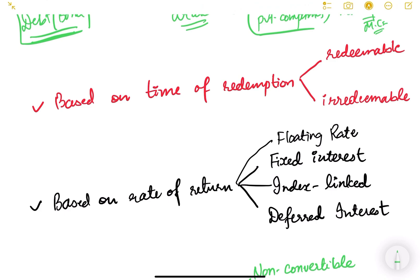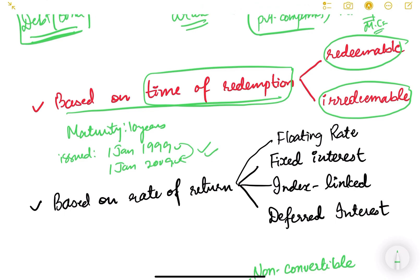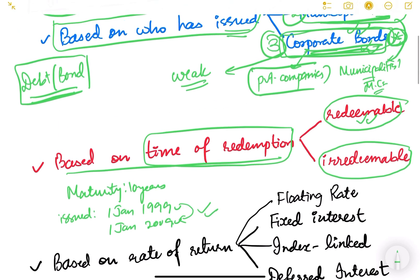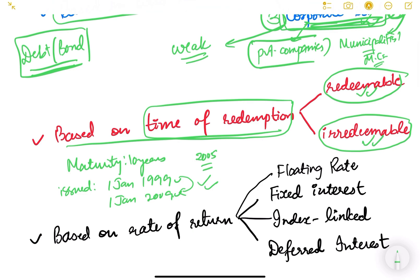The second classification is based on the time of redemption. Bonds are classified as either redeemable or irredeemable. Redeemable bonds can be redeemed before maturity — for example, a bond issued on 1st January 1999 with 10-year maturity could be redeemed in 2005, before the 2009 maturity date. Irredeemable bonds cannot be redeemed before maturity; they must be redeemed only at maturity.